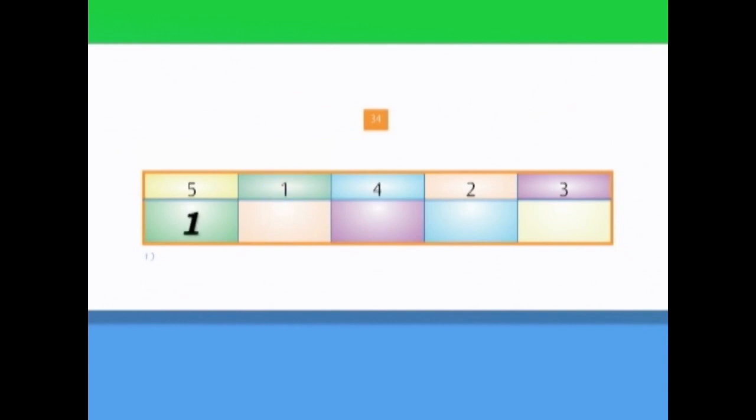Did you notice something? What color was the box with number one in it? It was green. What color is the first box in the second row? It's also green. So we're moving number one from one green box to another green box. That makes it very easy, doesn't it?